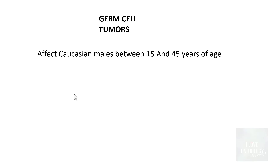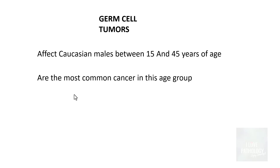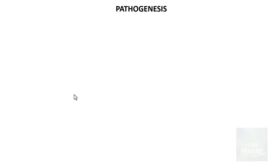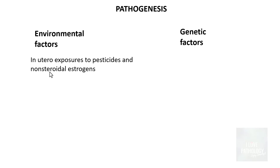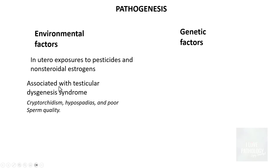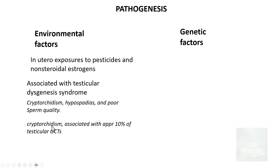Let us quickly understand the general aspects of germ cell tumors. These affect Caucasian males between ages 15 to 45 years and are the most common cancer in this age group. The pathogenesis of germ cell tumors is broadly categorized into two important factors: environmental factors and genetic factors. Exposure to pesticides and non-steroidal estrogens in utero leads to testicular dysgenesis syndrome, which is associated with cryptorchidism, hypospadias, and poor sperm quality. Cryptorchidism is associated with approximately 10% of testicular germ cell tumors.